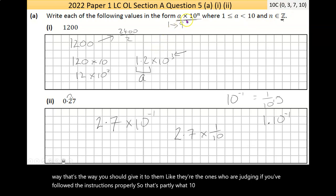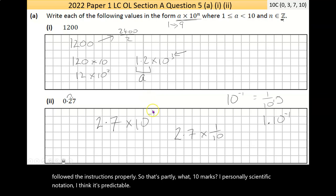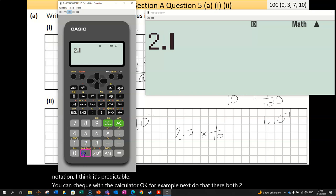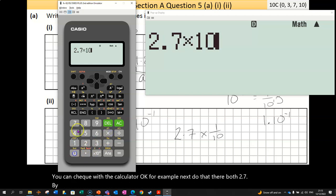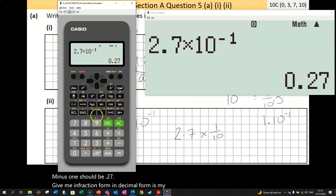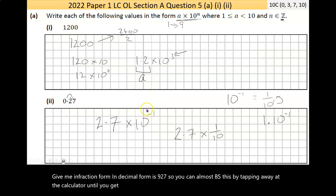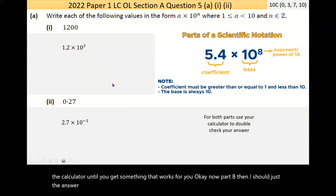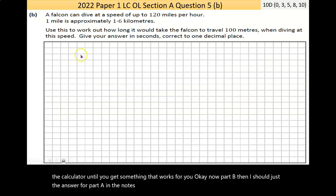So that's part A. Worth 10 marks. Now, I personally like scientific notation. I think it's predictable. You can check with the calculator. For example, 2.7 × 10^-1 should be 0.27. So you can almost BS this by tapping away at the calculator until you get something that works for you.